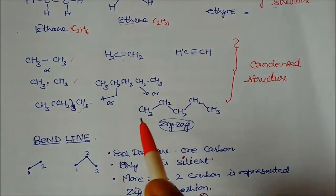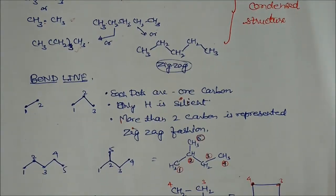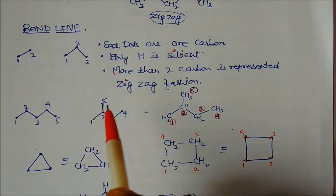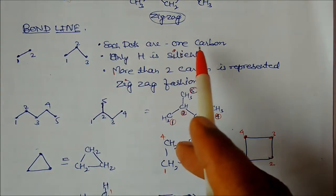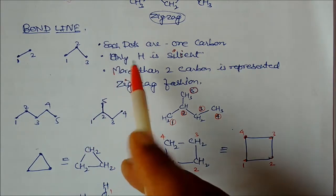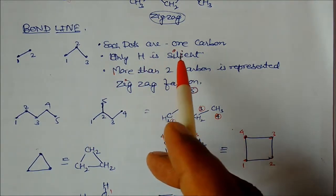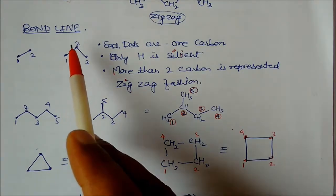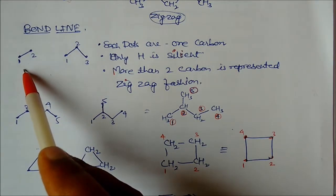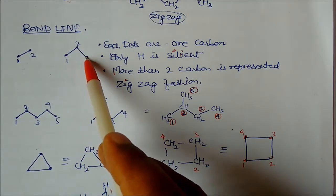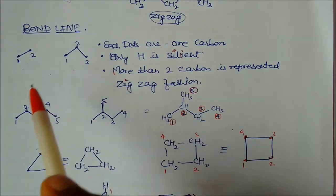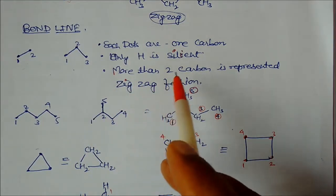Now the third type is bond line notation. In bond line notation, we show only the bonds. Each dot or vertex represents one carbon atom, and hydrogen is silent — hydrogen is not represented. For example, two dots represent ethane, and three dots connected by two bonds represent propane.